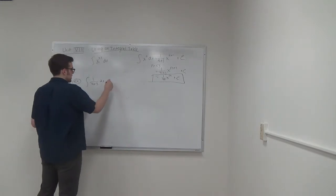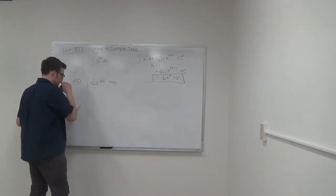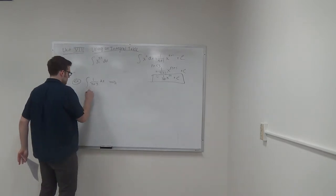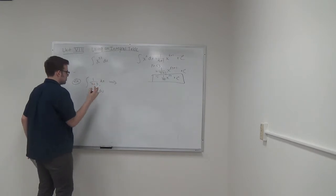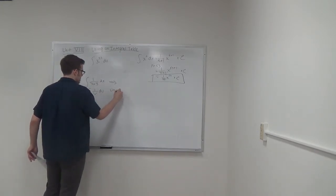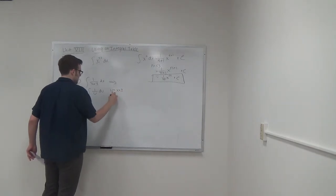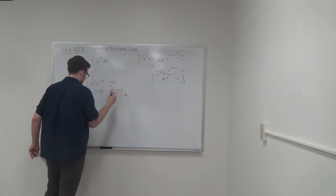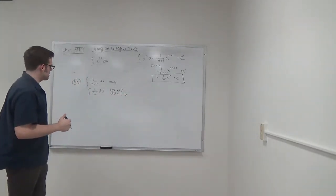So using an integration table, first let's just redefine. So 1 over u du, let's just make sure that we can do that. So u is equal to x plus 3, du is equal to 1 dx. So we can do this.